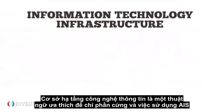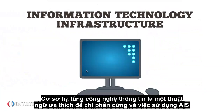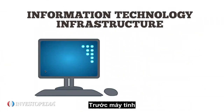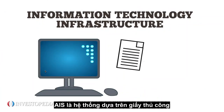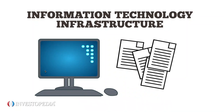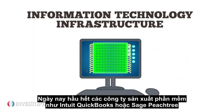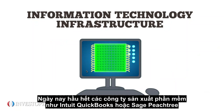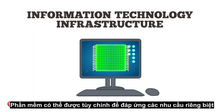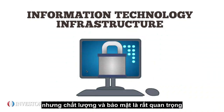Information technology infrastructure is a fancy term for the hardware an AIS uses. Before computers, AIS's were manual, paper-based systems. Today, most companies use software such as Intuit's QuickBooks or Sage Peach Tree. Software can be customized to meet unique needs, but quality and security are crucial.